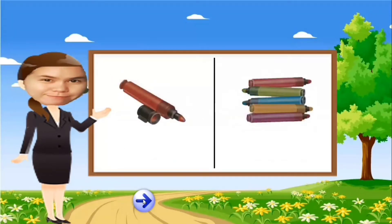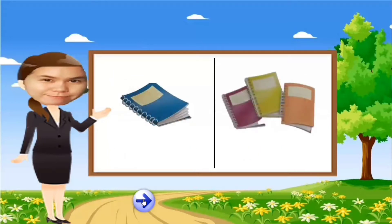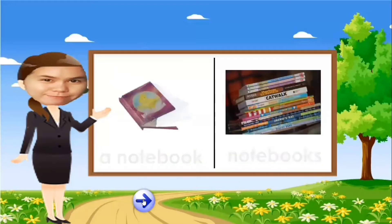On the left side, we have: it's a marker. On the right side, we have: they are markers. Next, on the left side, we have: it's a notebook. On the right side, we have: they are notebooks.